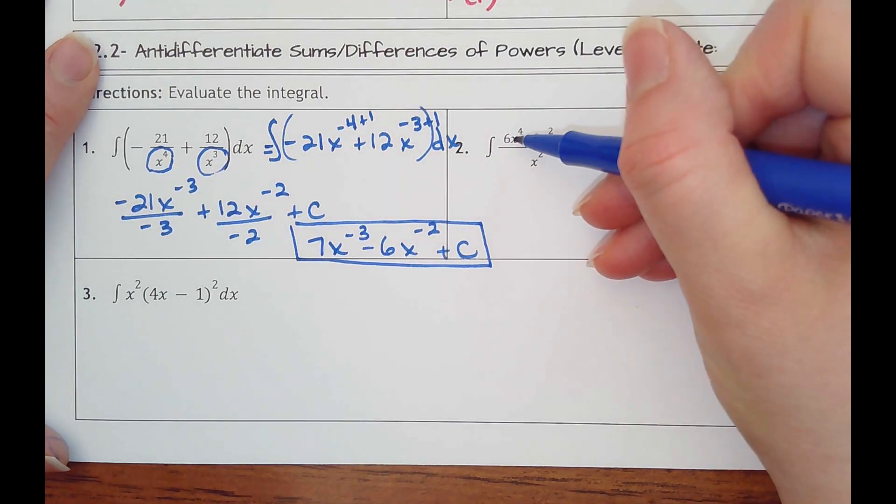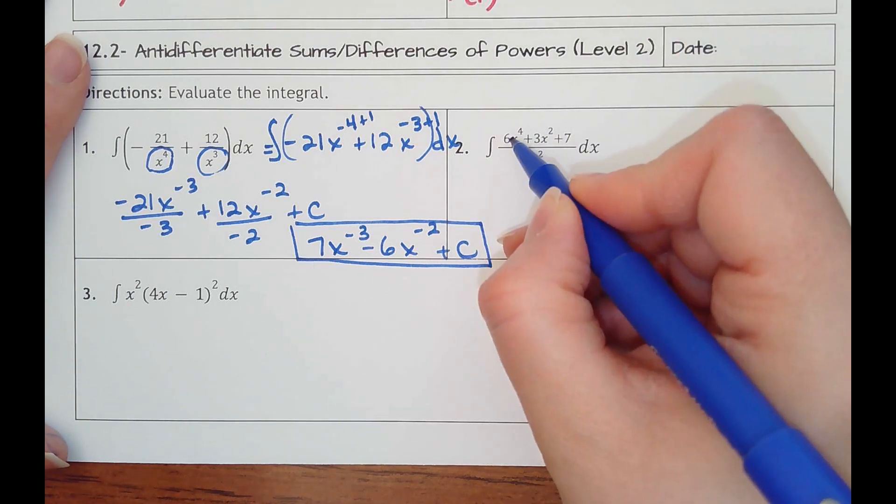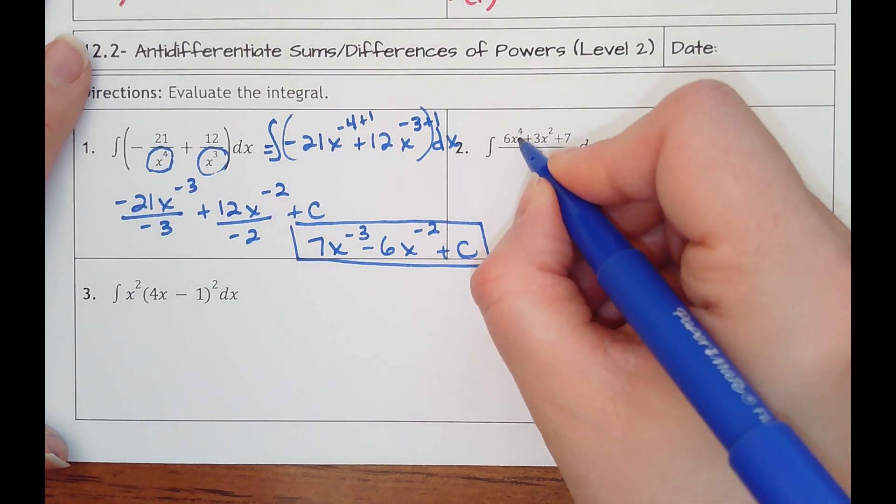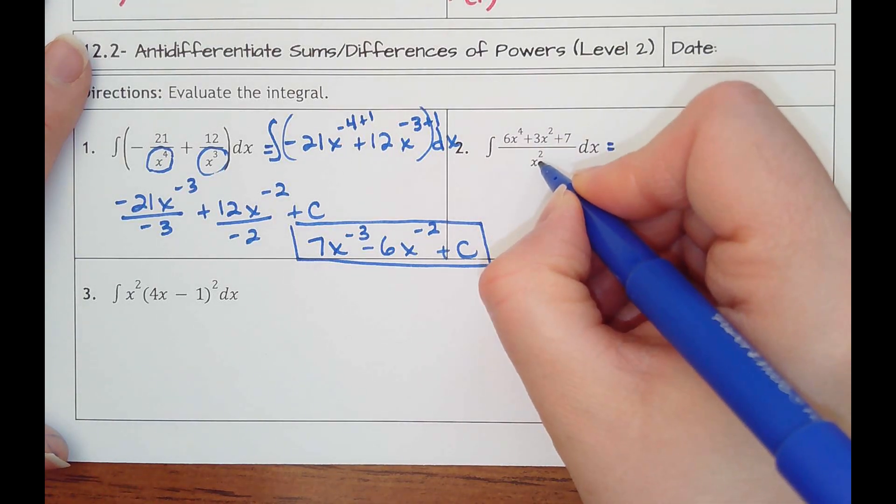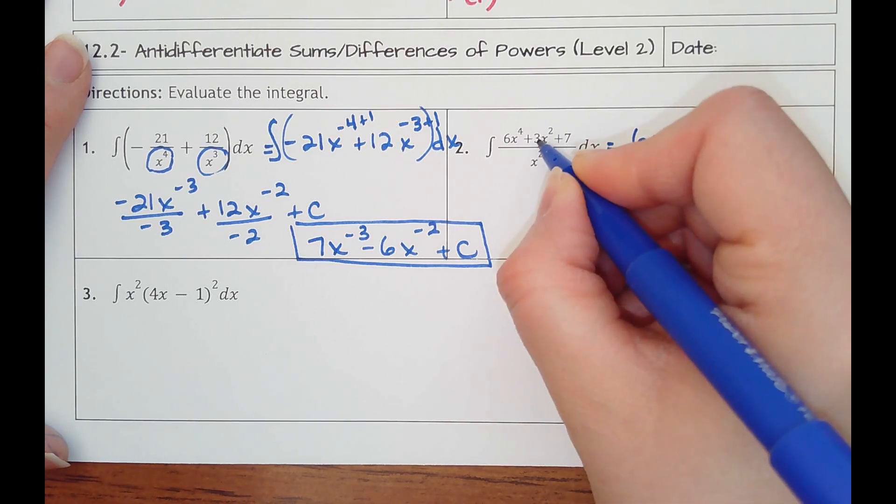All right, number 2. I have a trinomial getting divided by a monomial. When that happens, I can go ahead and divide, divide, divide. So we would rewrite this as x to the 4th divided by x squared. Subtracting the powers, that would be 6x squared, plus 3.